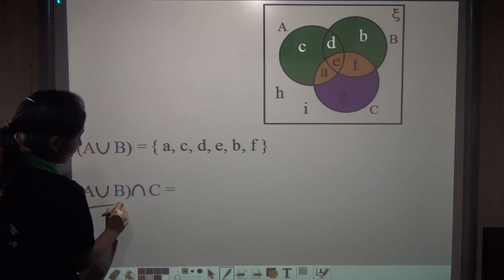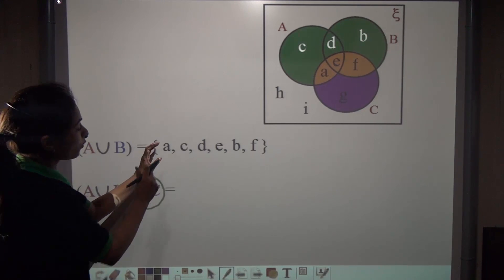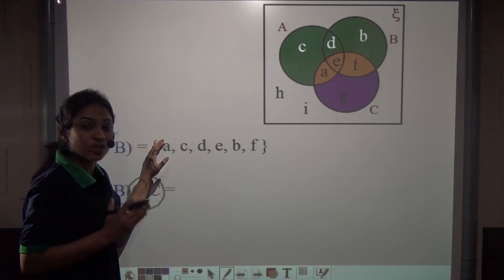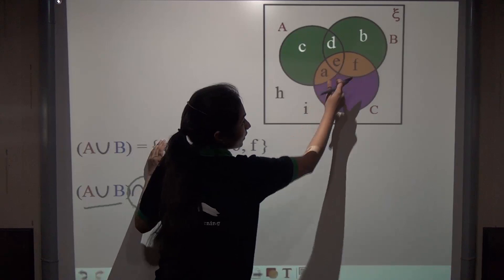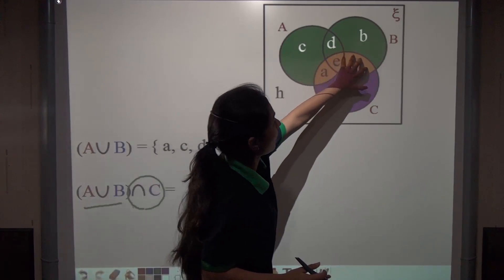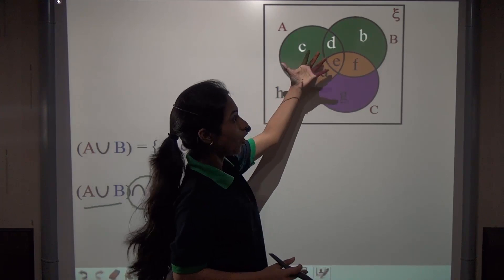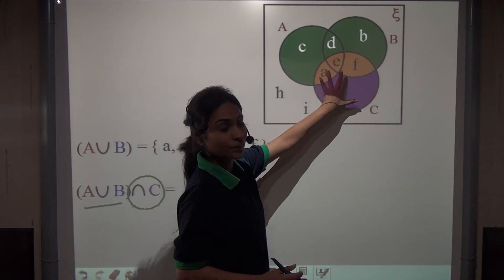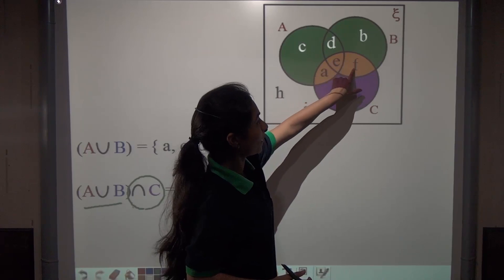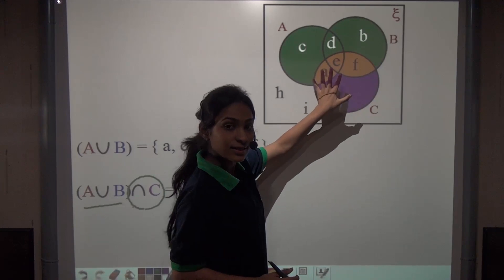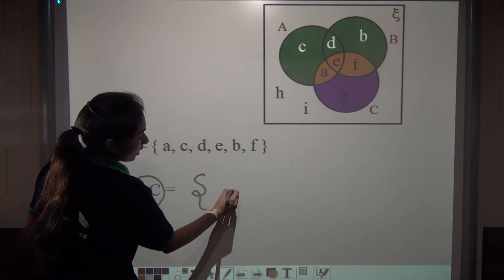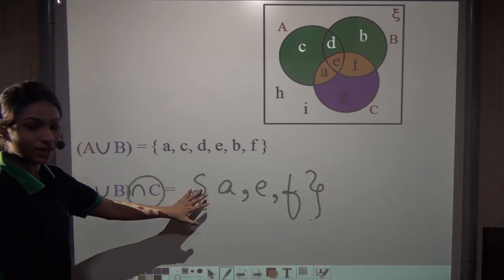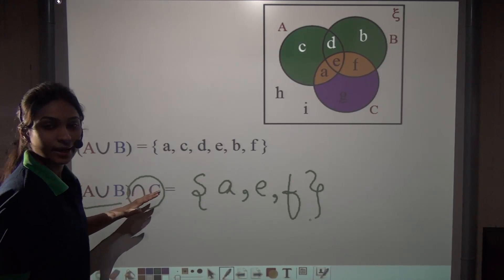Now we have to find out (A∪B)∩C. Among these letters or alphabets, which are those alphabets that are actually present in C also? See, these orange highlighted parts show us the letters which are in A or in B or both, but actually have to be present in C. So a, e, and f are present in A or B but are present in C. So I can write {a, e, f}. This gives me the answer for (A∪B)∩C.